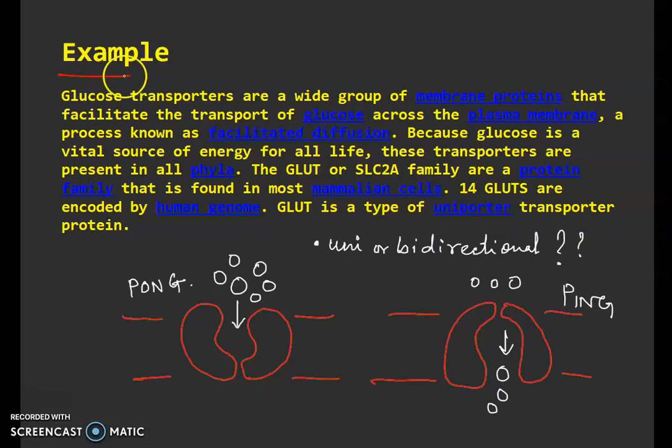Glucose transporters are a wide group of membrane proteins that facilitate the transport of glucose across the membrane. The process is called facilitated diffusion because glucose is a vital source of energy for all life. If there is a mutation in GLUT4, you may have diseases like diabetes mellitus. These transporters are present in all phyla. Fourteen GLUTs are encoded by the human genome, and GLUT is a type of uniporter.